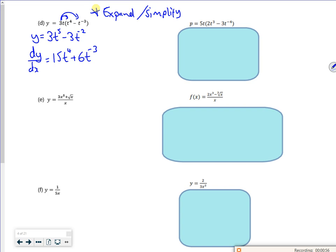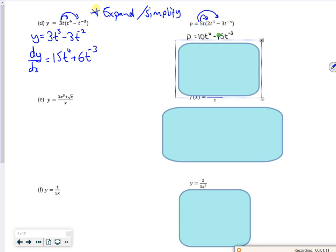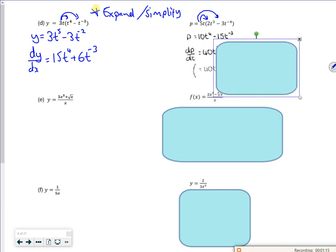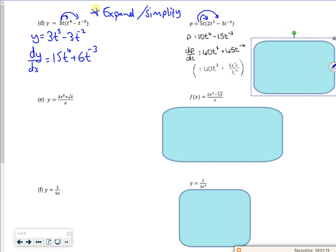So let's expand this one, so I've got 5t times 2t cubed, which is 10t to the 4. And then 5t times minus 3t to the minus 4, which is minus 15t to the minus 3. Then, if I differentiate it, I should get 40t cubed plus 45t to the minus 4. There we go.